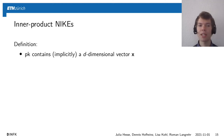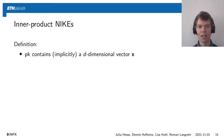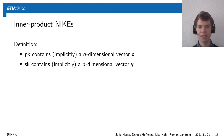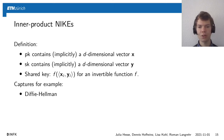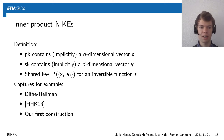Of course, the large keys of our NIKE are a big disadvantage. Unfortunately, we also have a lower bound showing that these keys are necessary for a large class of NIKEs, which we call inner product NIKEs. They are defined as follows: public keys contain implicitly a d-dimensional vector x, secret keys contain implicitly a d-dimensional vector y, and the shared key is a function f applied to the inner product of the vectors in the public and secret key. This captures all known group-based constructions, for example the Diffie-Hellman key exchange, the work by Hesse et al., and also our first construction.